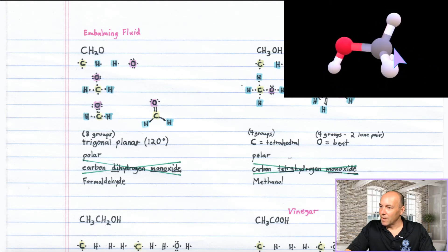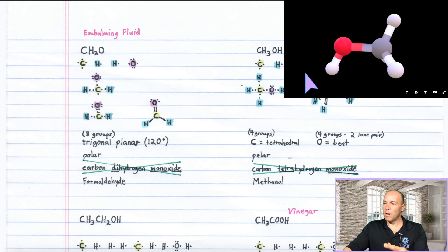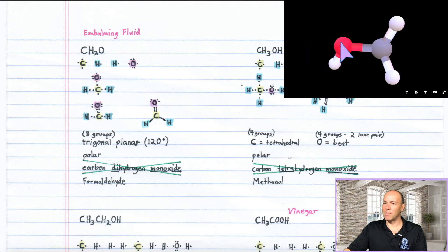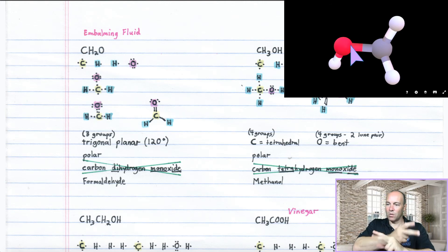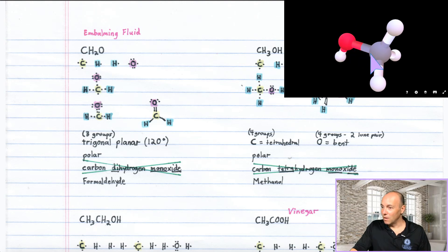An interesting thing about single bonds is that they can rotate. So you can have the three hydrogens on one side and then this part can rotate — the hydrogen can be circling around, so the molecule doesn't have a fixed overall shape. When you get to more complex molecules, their shape changes, but the geometry around specific atoms stays the same. No matter how this bond rotates, the carbon remains tetrahedral and the oxygen remains bent. Methanol is not an alcohol you'd want to consume — it's a very toxic substance, much more toxic than ethanol.